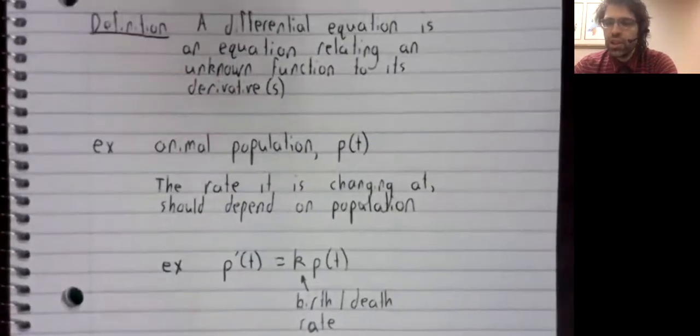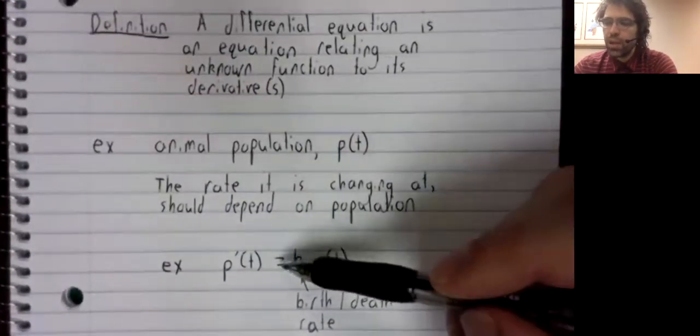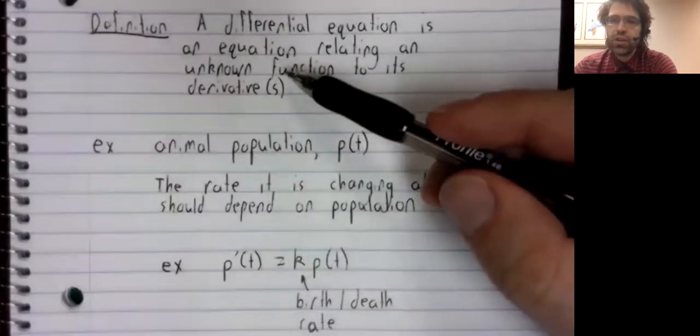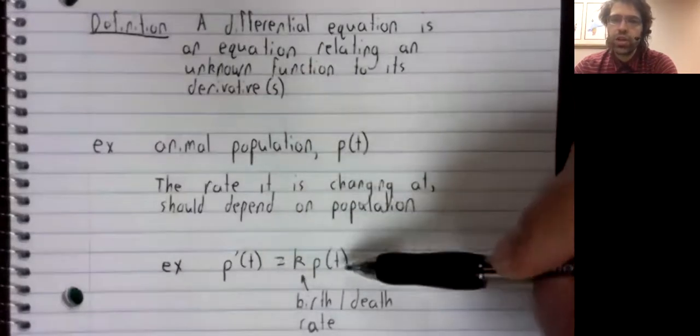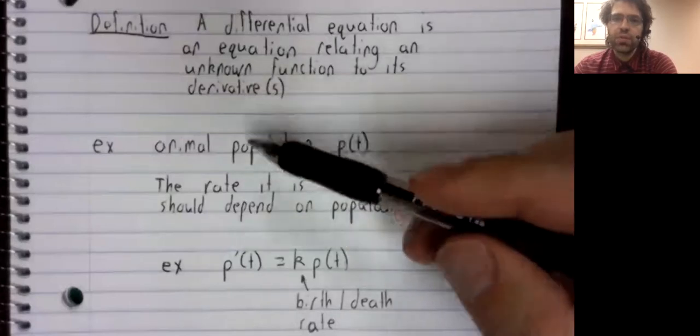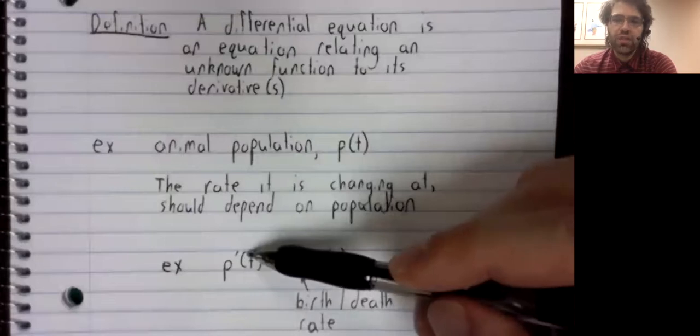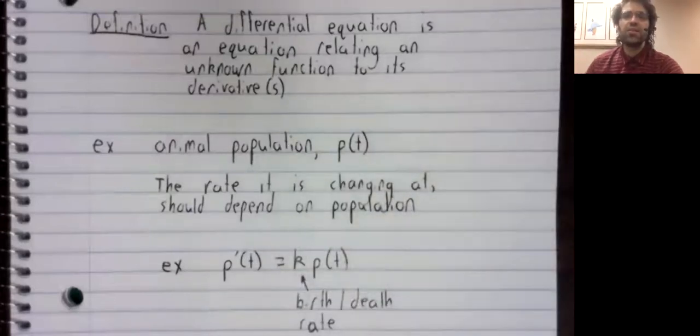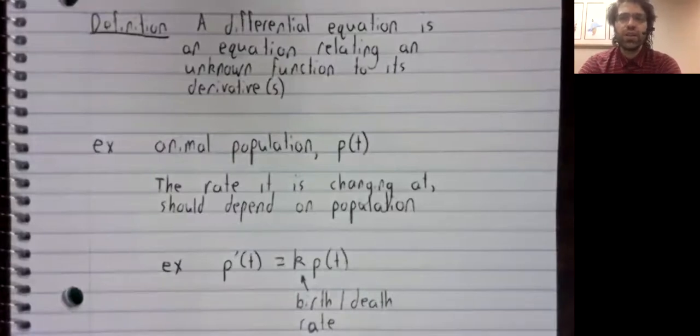And you see, we've got an equation relating an unknown function, p of t, to its derivative. This then is an example of a differential equation.